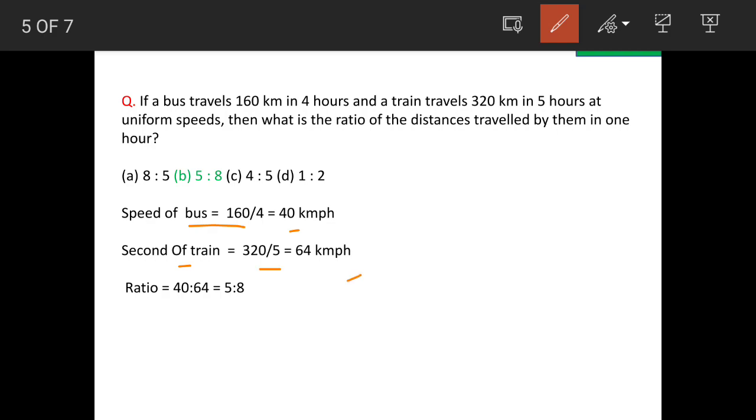So it will be 64 kilometers per hour. What is the ratio? The ratio is 40 divided by 64, and when you simplify this you get 5 is to 8. This is our answer.